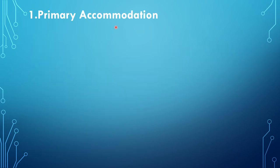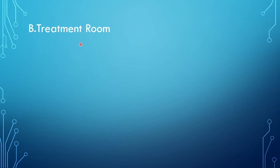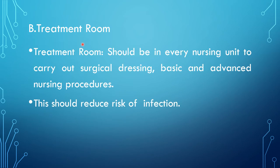The physical layout should be planned so it helps the nurse manager discharge duties efficiently. It consists of primary accommodation, ancillary accommodation, and sanitary accommodation. In primary accommodation, patient rooms consist of single or multiple bedrooms. For planning purposes, 120 square feet per bed is allowed for one bed; 180 square feet for 2 beds; 330 square feet for 4 beds; and 400 square feet for 6 beds. Every nursing unit should have a separate treatment room to carry out surgical dressings, basic and advanced nursing procedures, and to reduce the risk of infection.